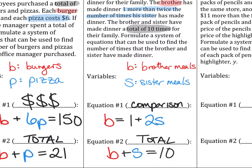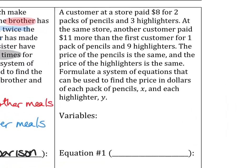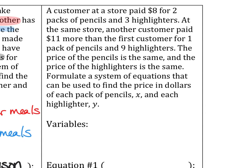This is a really good question. He said, is the second equation always going to be a total? No. But most of the time, it is a total equation. And actually, our next example is an example where it's not a total for the second equation. So let's read that one and see what's going on here. It says, a customer at a store paid $8 for two packs of pencils and three highlighters. At the same store, another customer paid 11 more than the first customer for one pack of pencils and nine highlighters. The price of pencils is the same and the price of highlighters is the same. Formulate a system of equations that can be used to find the price in dollars of each pack of pencils X and each highlighter Y.